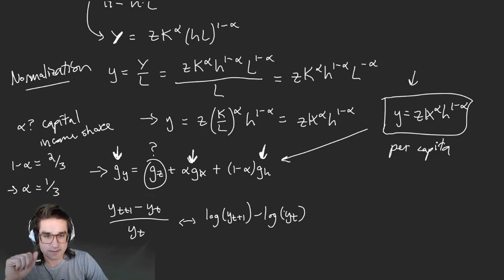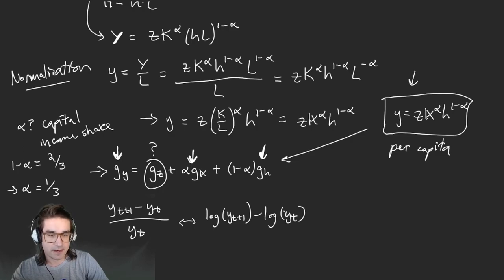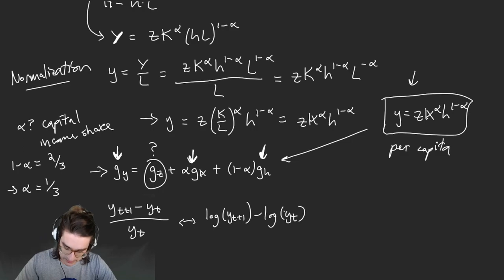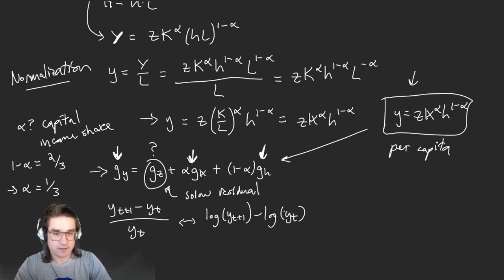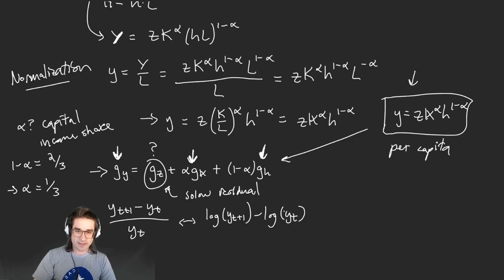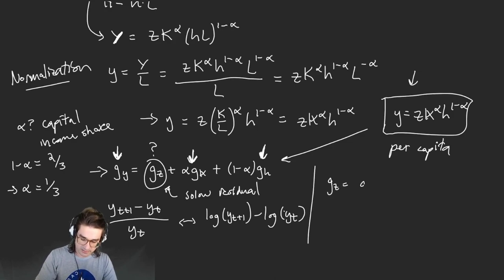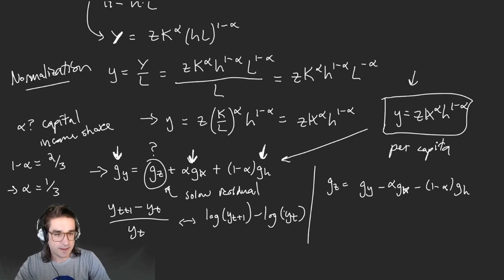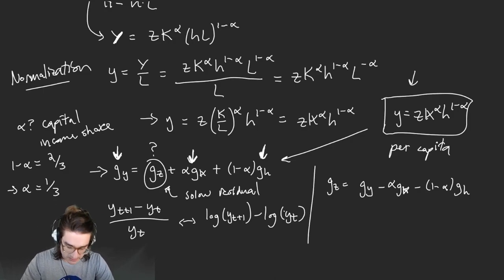So let's say you can observe these things. Now we've got basically everything but G_Z. That technology component is quite unobservable — very hard to value. That's why this is called a residual, sometimes the Solow residual. It's the same Solow as the Solow model we've been talking about — he sort of proposed this framework. So G_Z is just whatever is left over after accounting for all the observable contributions.